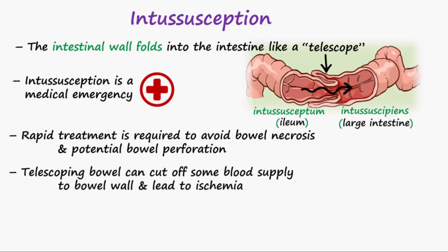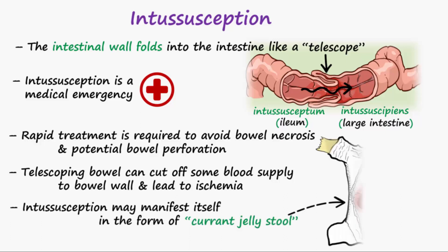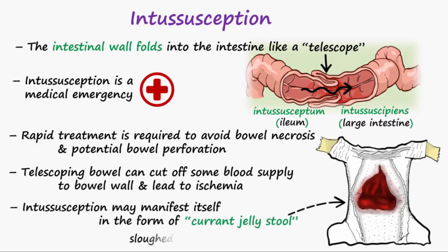This ischemic mucosa can slough off and produce what's called a currant jelly stool. This stool is a mixture of sloughed off mucosa, blood, and mucus, and looks like currant jelly.